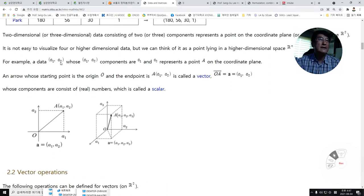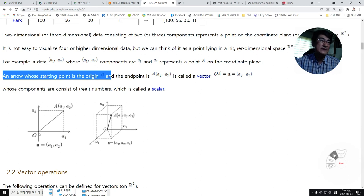For example, (a1, a2) whose components are a1 and a2 represent a point A on the coordinate plane. An arrow whose starting point is the origin O and the endpoint is A is called a vector, which is represented as OA bar or bold A, whose components consist of a1 and a2.